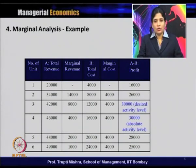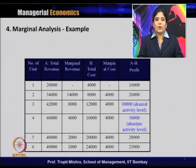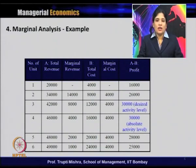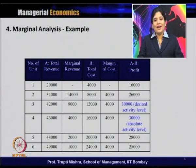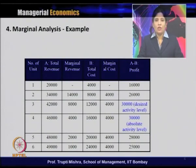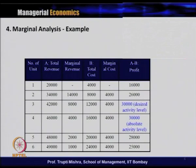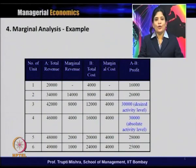Total cost for two units is 8,000. Since the per-unit cost remains constant at 4,000, marginal cost is also constant. Marginal cost for the second unit is 8,000 minus 4,000, which equals 4,000. Profit for two units is total revenue 34,000 minus total cost 8,000, giving 26,000. For three units, total revenue is 42,000 and marginal revenue is 8,000, calculated as 42,000 minus 34,000. Total cost for three units is 12,000 and marginal cost is again 4,000 (12,000 minus 8,000). Profit is 42,000 minus 12,000 = 30,000.